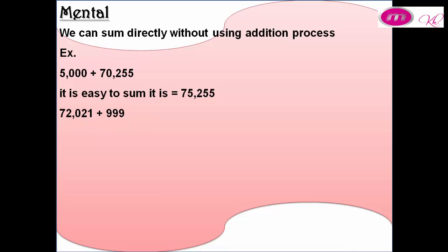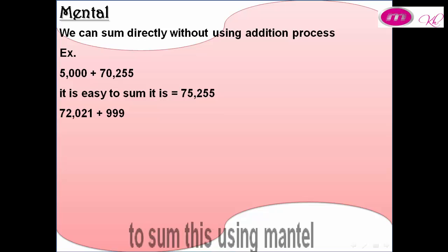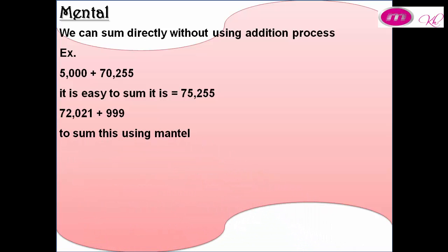72,021 plus 999. To sum this using mental math without the addition process: add 1,000 to 72,021, it is 73,021. Then subtract 1 from it, it will be 73,020.